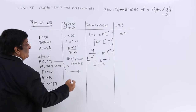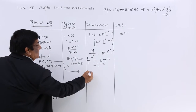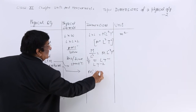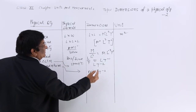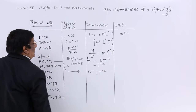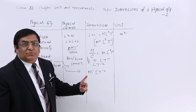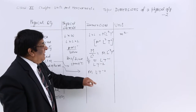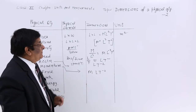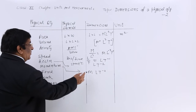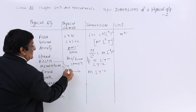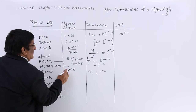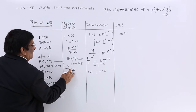Momentum is mass multiplied by velocity. Mass has dimension M, and velocity has dimensions L T⁻¹. So momentum has dimensions M L T⁻¹.